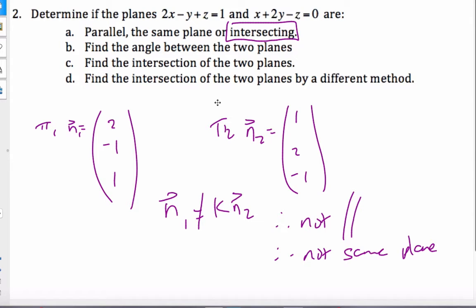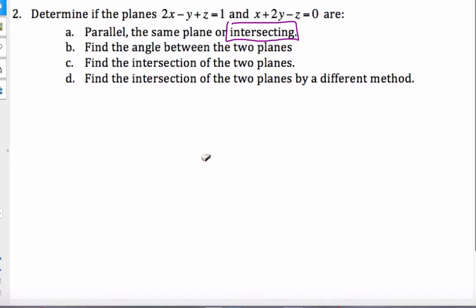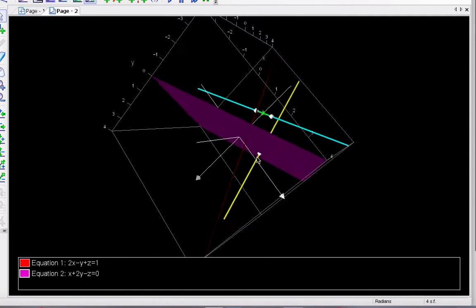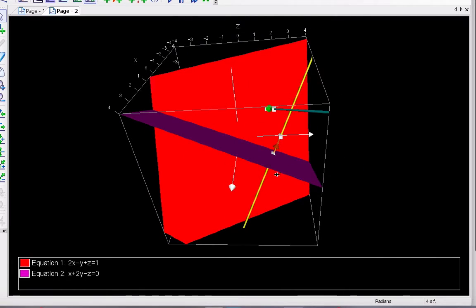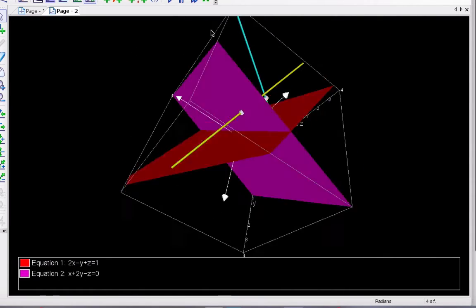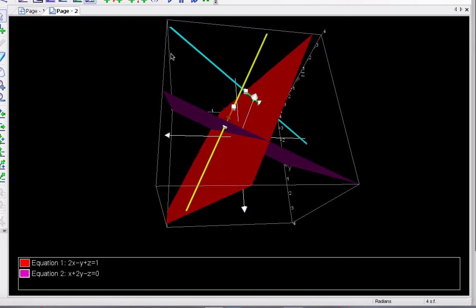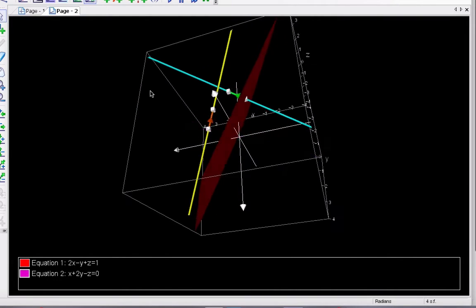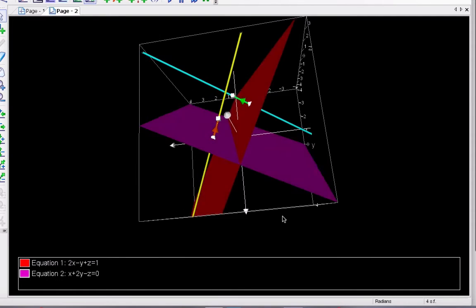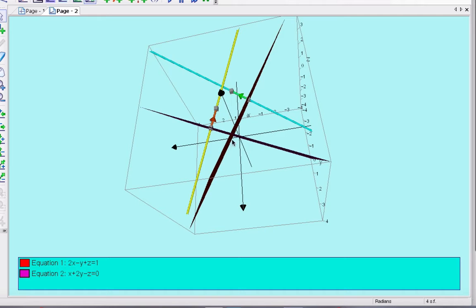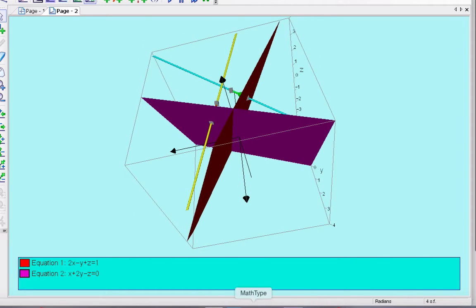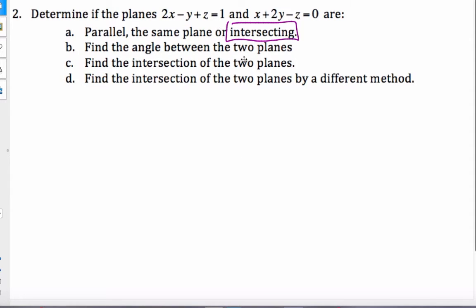Now if I want to find the angle between the two planes, I've graphed the two planes and we want to find the angle that exists between them. I've placed some normal vectors and if I think about the angle between these normal vectors, it has to be the same as the angle between these two planes.